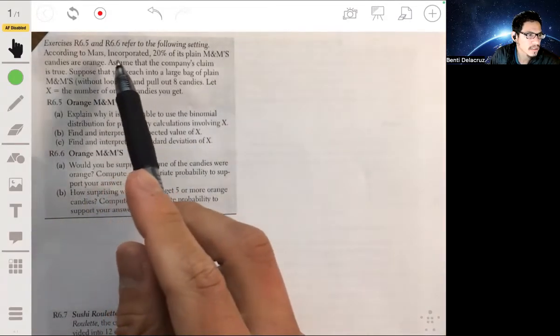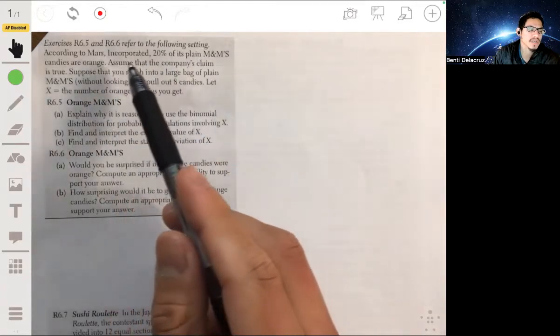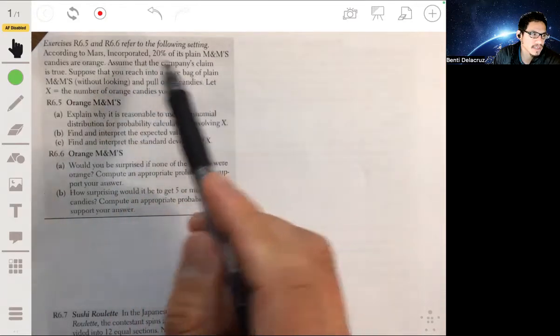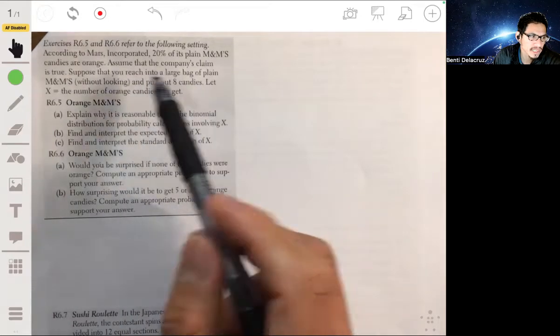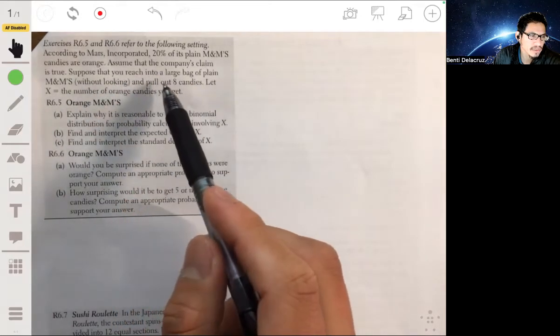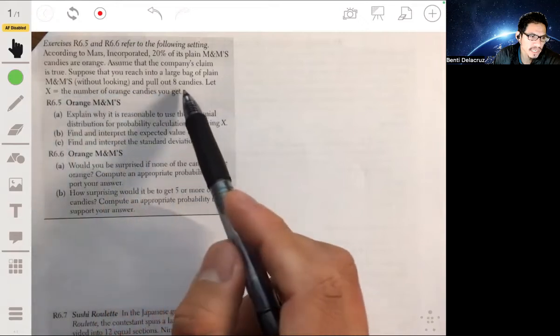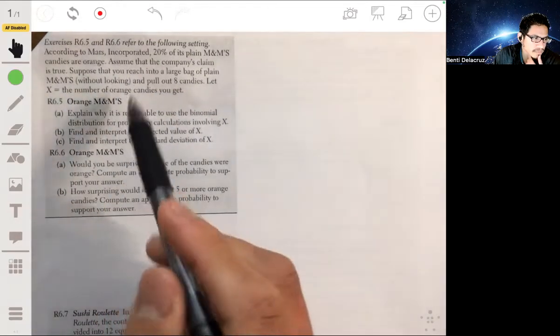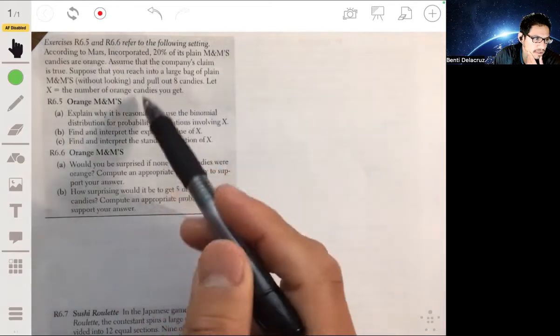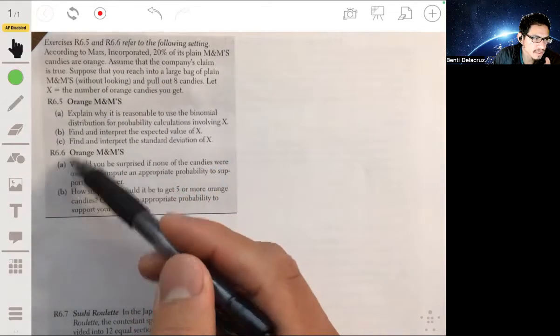According to Mars Incorporated, 20% of its plain M&Ms candies are orange. Assume that the company's claim is true. Suppose that you reach into a large bag of plain M&Ms without looking and pull out eight candies. Let X equal the number of orange candies you get. So two problems dealing with this same scenario: part A is 6.5 and 6.6, part A.